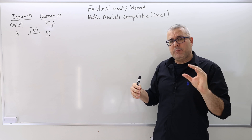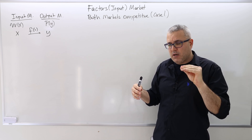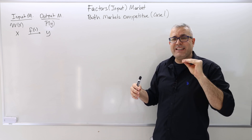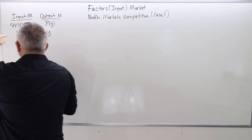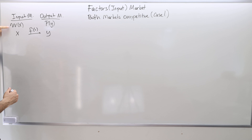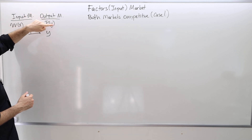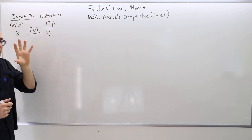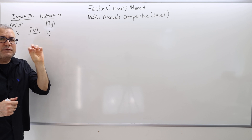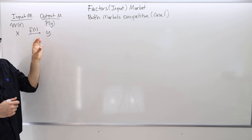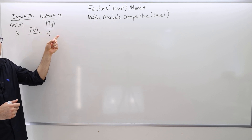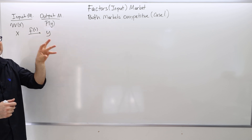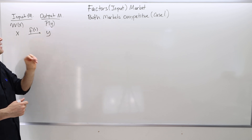Whenever you have a perfectly competitive market, it means the firms are price takers. So although in the input market there is a supply curve and in the output market there is a demand curve, the firm operating in these two markets will take the prices — the wage here and the price of output here — as given. They cannot change the price.